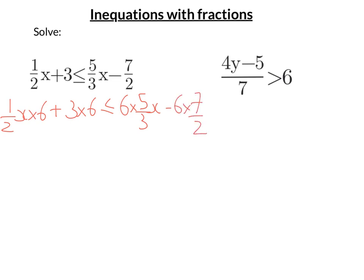So 6 times a half is 3X. Plus 3 times 6 is 18. And that is less than or equal to 6 times 5 is 30, divided by 3 is 10X. And 6 times 7 is 42, divided by 2 is 21. Now we've got a much simpler equation to solve.